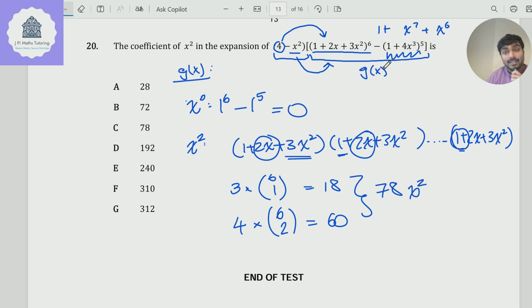So the coefficient of x² in g(x) is 78. And now then, if I multiply by the (4 - x²) and expand all that out, the 4 is the thing I'm interested in. I'm going to get 4 times 78, which will give me 312. So the answer here is G, 312.